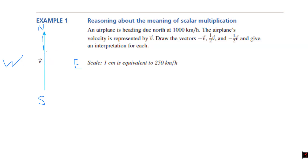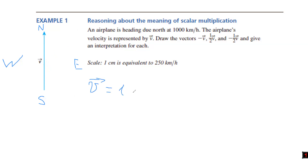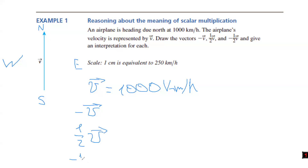That's what vectors are about — defining direction. We have vector V equal to 1000 km/h. We need to draw minus V, one-half V, and minus one-half V. Minus V basically equals minus 1 scalar times V. We already discovered that when a vector has a minus in front of it, its direction gets reversed to the opposite.